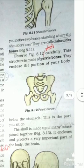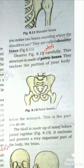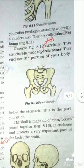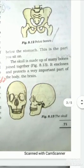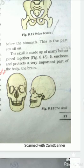This structure is made up of the pelvic bones. They enclose the portion of your body below the stomach. The skull is made up of many bones joined together, as shown in figure 8.13. It encloses and protects a very important part of the body — the brain.